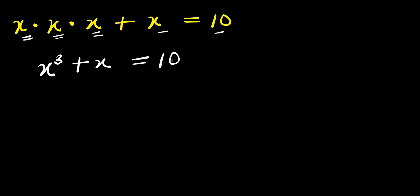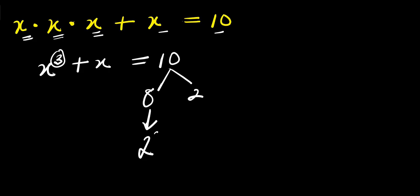From here I can split 10 into two parts: I have 8 and I have 2. 8 plus 2 is 10. Now there is a power of 3 here, so I can express 8 as 2 to the power of 3, that is 2 times 2 times 2 which is 8. And I leave the 2 as 2 to the power of 1, but since there is a cube here, I'm expressing 8 as 2 power 3.